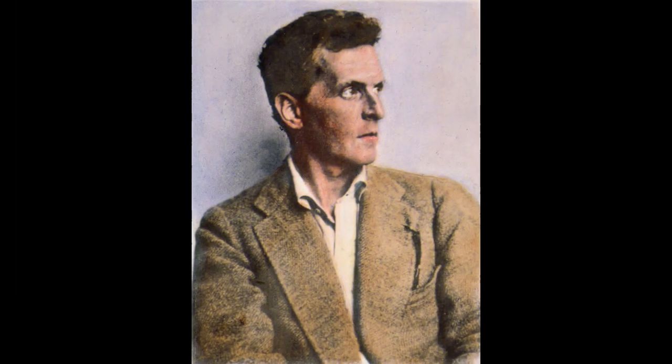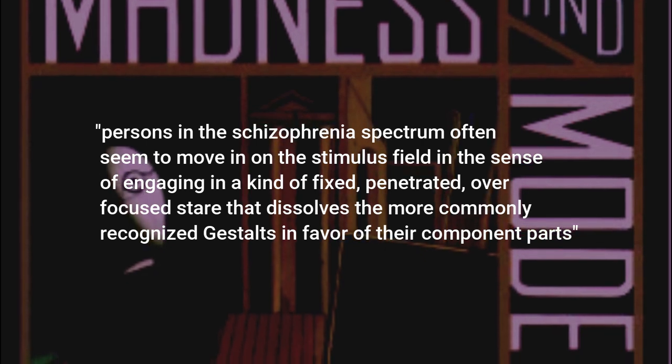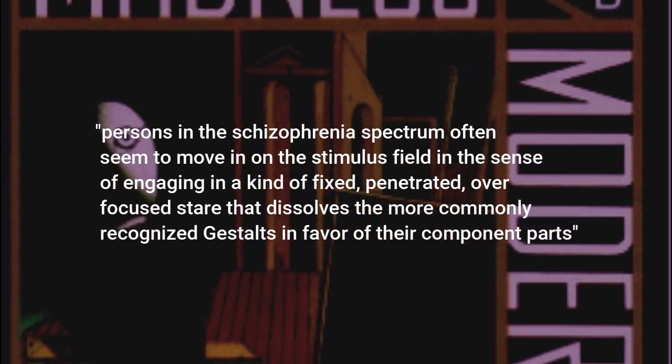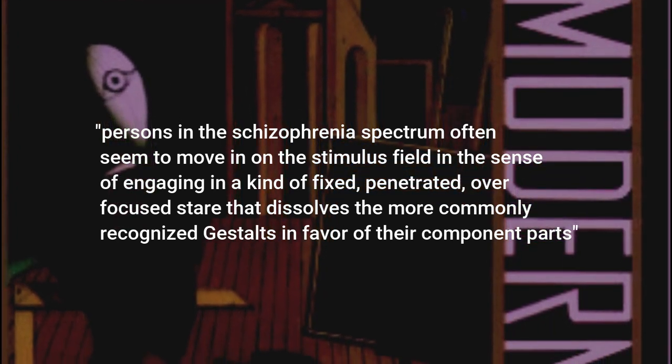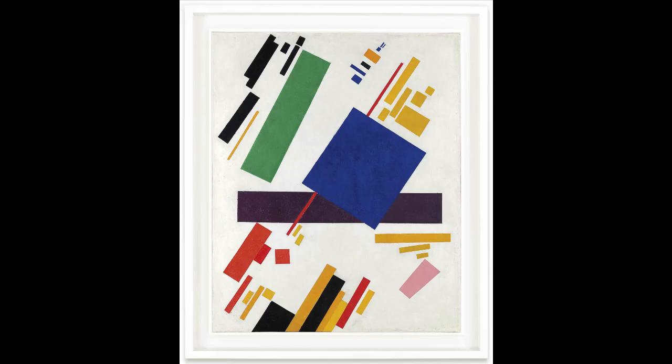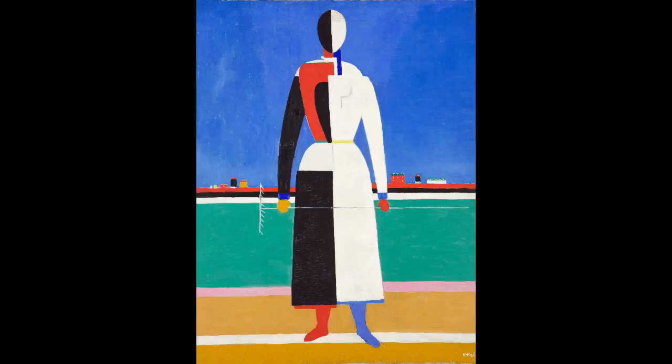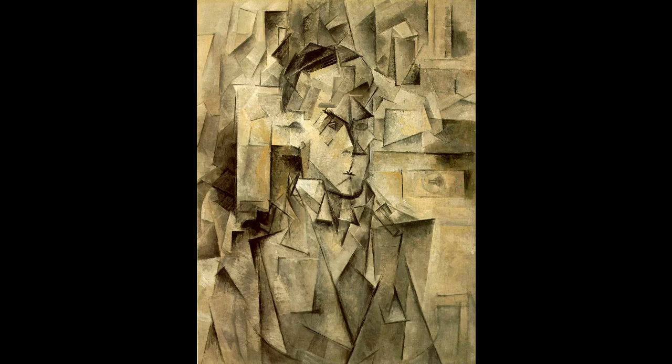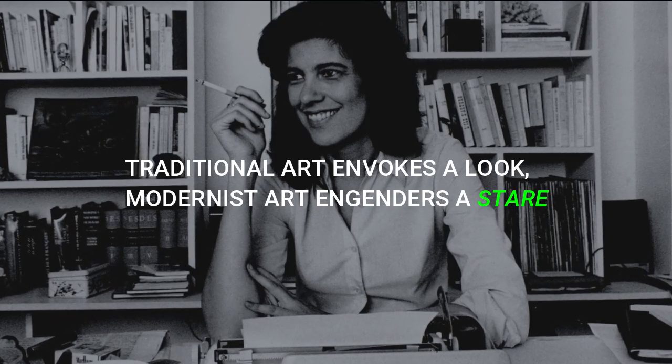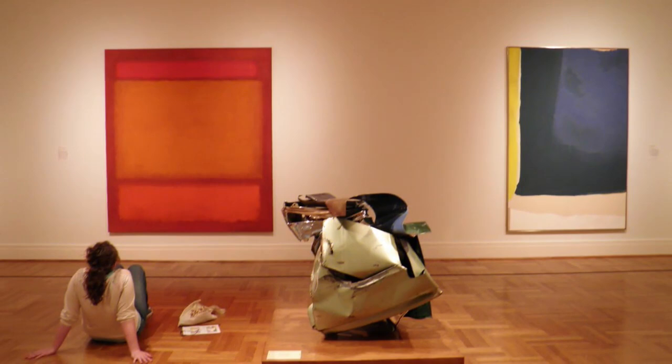Hyper-consciousness, loss of ipseity, and so-called unworlding are fundamental to the experiences of schizophrenia. The disintegrated stare that Wittgenstein noticed is characteristic of schizophrenia. Sass writes: 'Persons in the schizophrenia spectrum often seem to move in on the stimulus field in the sense of engaging in a kind of fixed, penetrating, over-focused stare that dissolves the more commonly recognized gestalts in favor of their component parts.' This is also a feature of modernism and something invited into conscious perception, bringing about willfully the fragmented world of the left hemisphere. Susanne Sontag alluded to this: 'Traditional art invokes a look; modernist art engenders a stare' — a stare that suggests alienation, either a need for control or a feeling of terrified helplessness, and is not known for building bridges with others or with the world at large.